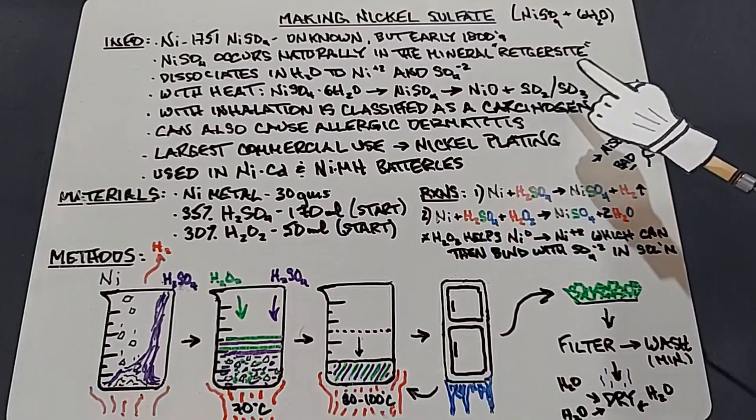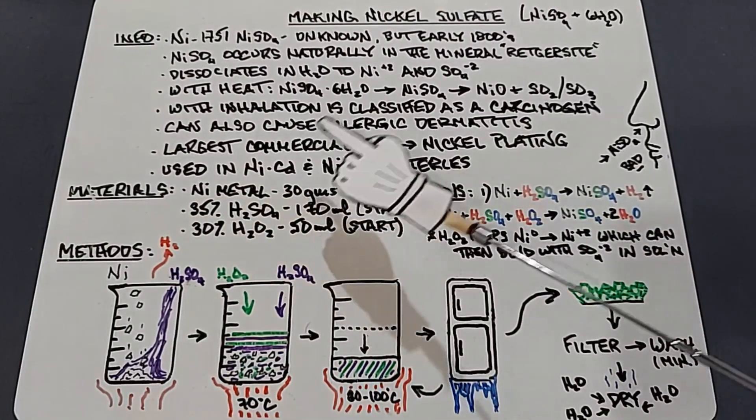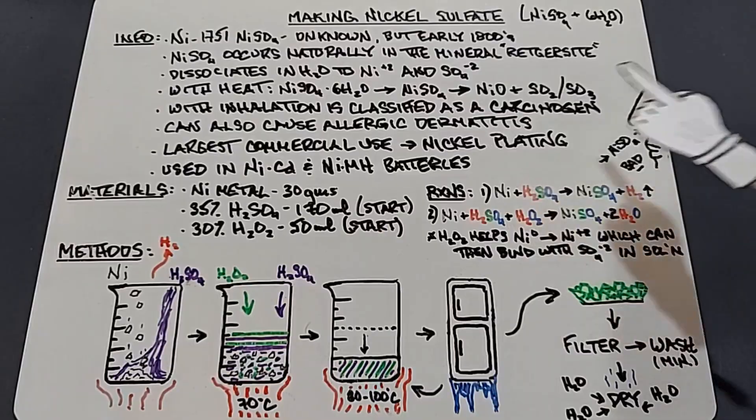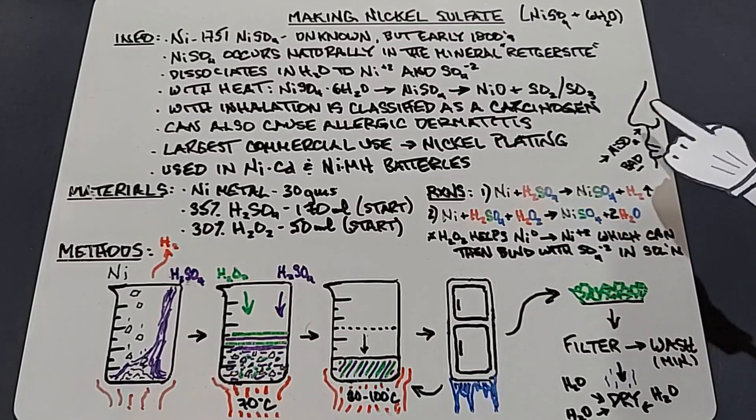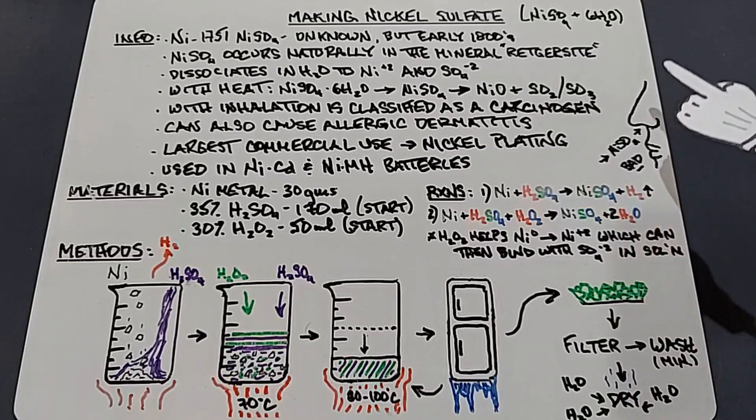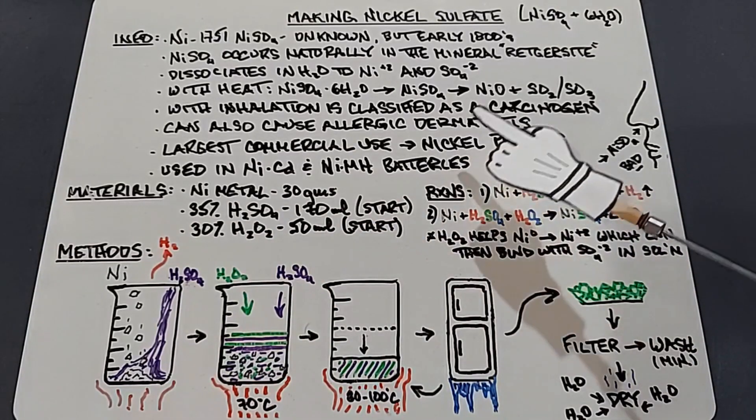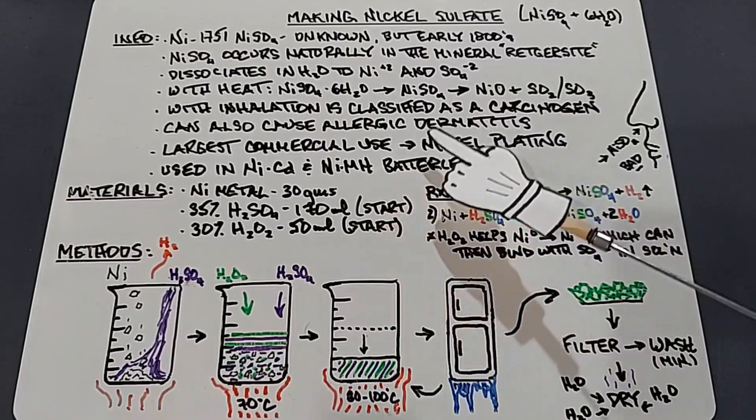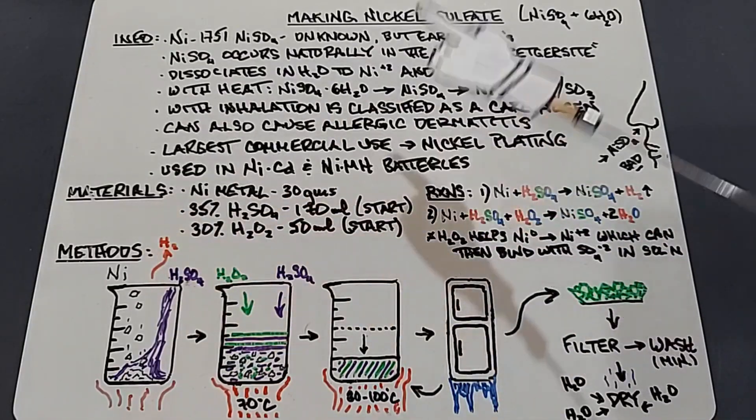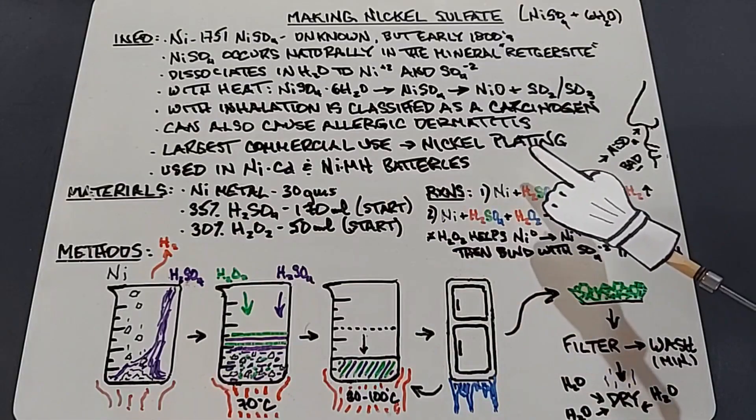Inhaling nickel sulfate dust is classified as a carcinogen. I drew this little diagram to help you out - that's a nose, those are lips. Nickel sulfate going into the nose is bad. It can also cause allergic dermatitis, so obviously wear gloves and a breathing mask. The largest commercial use is nickel plating, the same reason we're making it, and it's also used in nickel cadmium and nickel metal hydride batteries, much like nickel chloride.